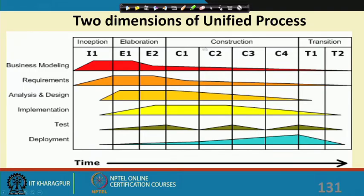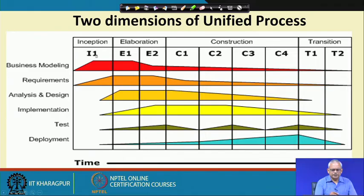We looked at the RAD model and also the Unified Process. The Unified Process is extensively used for object-oriented software development. It is an incremental model in the sense that much of the requirement is identified upfront, but it also has features of evolutionary development because features continue to be discovered as development proceeds. The development occurs over four phases, and each phase can consist of several iterations. The life cycle activities overlap across different phases but peak during certain phases.